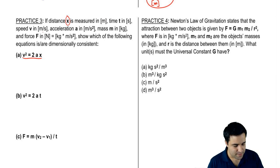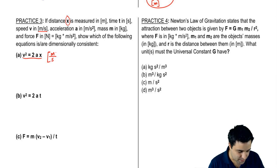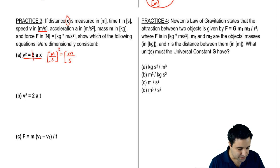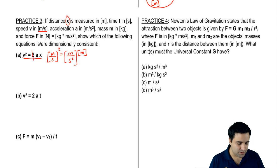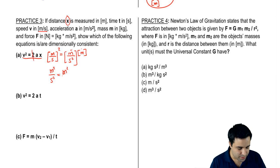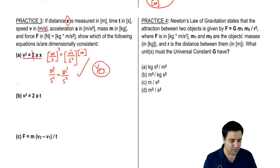Velocity is measured in meters per second, but that velocity is squared — so it's meters per second, the whole thing squared. The two I can just drop since I'm only looking at units. Acceleration is meters per second squared, and X is distance, which is meters. On the left I have meters squared over seconds squared. On the right there are two meters, so I also have meters squared over seconds squared. They are the same, so yes — these are dimensionally consistent.